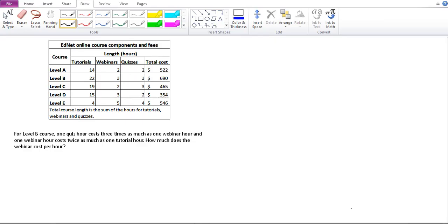The first step in trying to solve such a question is to understand the relationship between these variables mentioned in the question. In Level B course, you've got tutorials, webinars, and quizzes with a set number of hours. One quiz hour costs three times as much as one webinar hour, and one webinar hour costs twice as much as one tutorial hour.